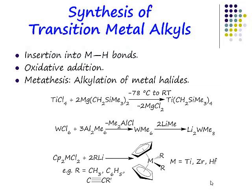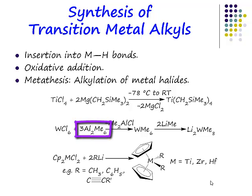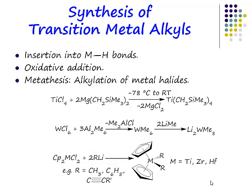You will note that we have a titanium tetraalkyl compound there — that's not a mistake. There's something special about this titanium tetraalkyl compound that means it is actually stable. We can do the same sort of thing with tungsten; any more electropositive organometallic reagent will do. Trimethyl aluminium is reactive enough to alkylate tungsten hexachloride. Here we're using methyl lithium or an alkyl lithium in order to make a metallocene alkyl species.